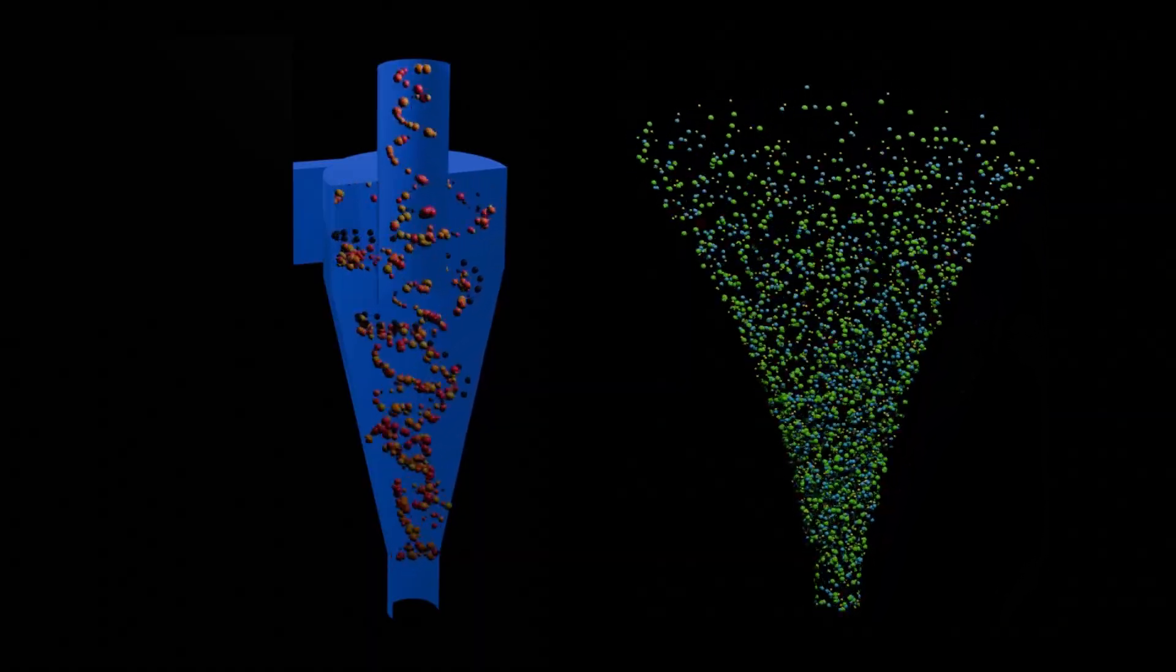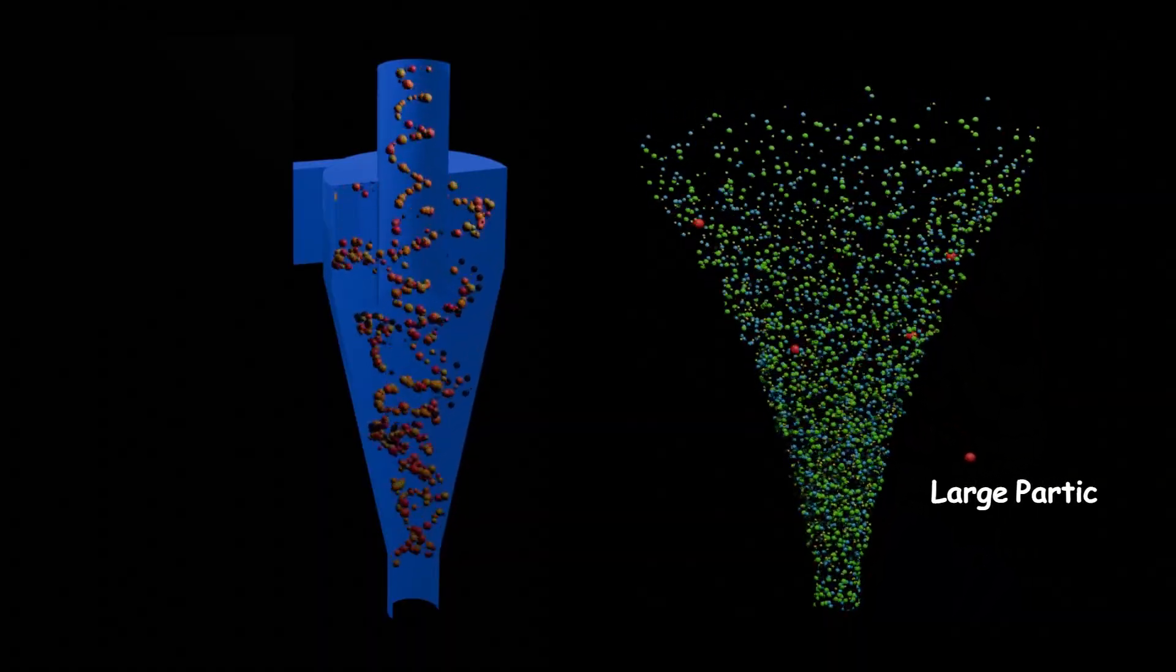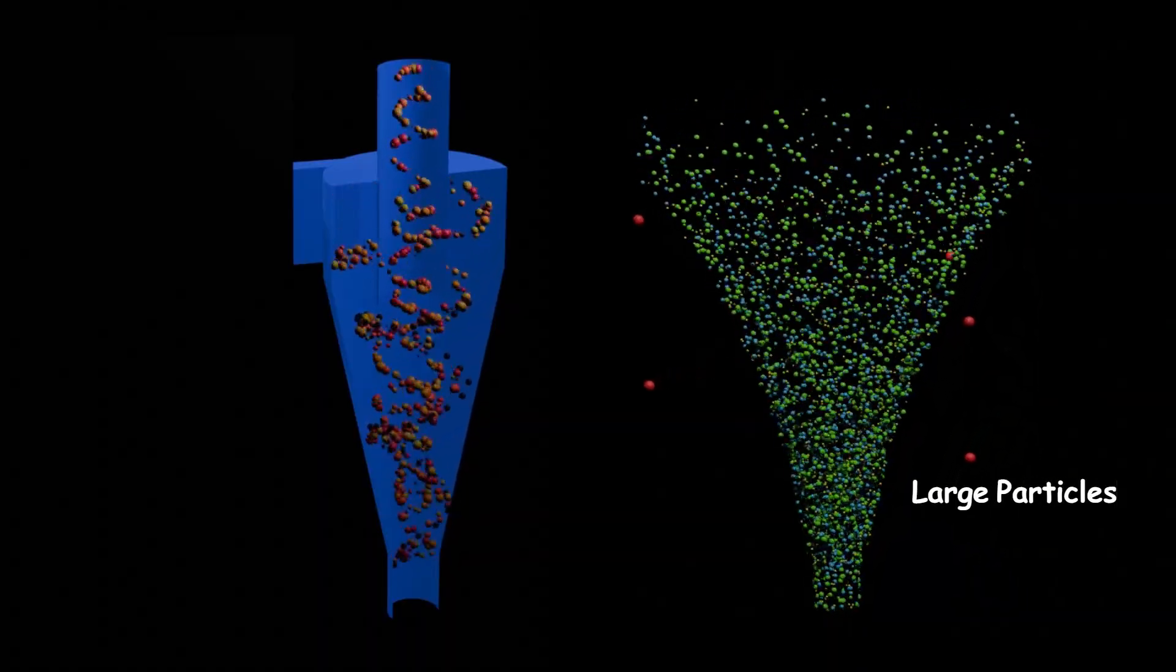The heavy particles move towards the edge of the tornado until it flies out. Using this phenomenon, we can apply this to a cyclone separator to separate large particles from the gas flow.